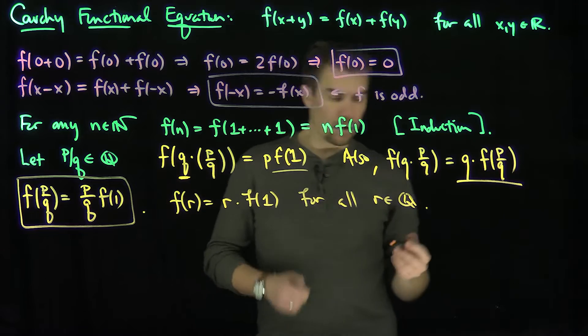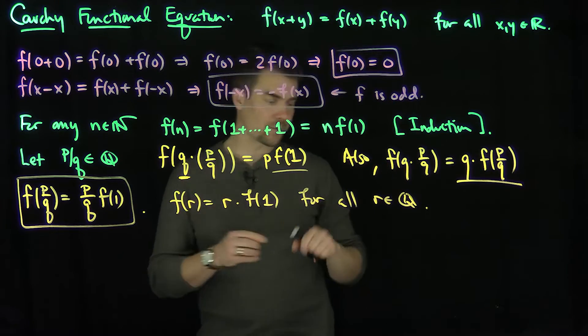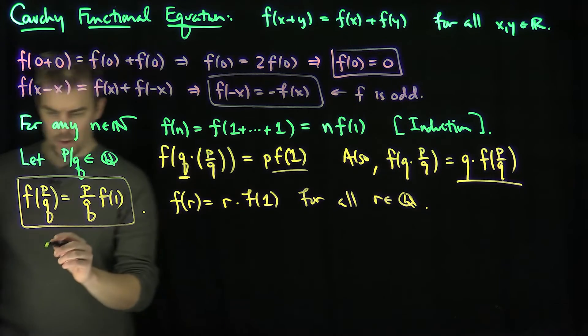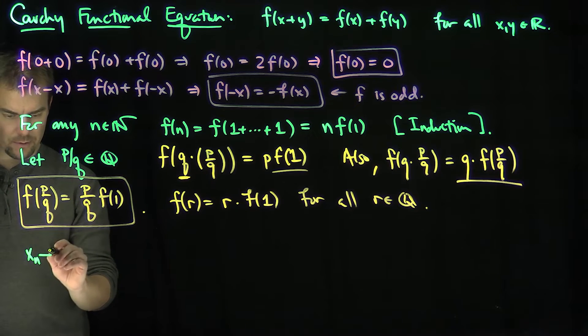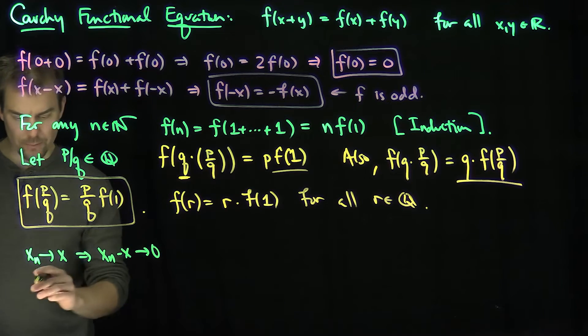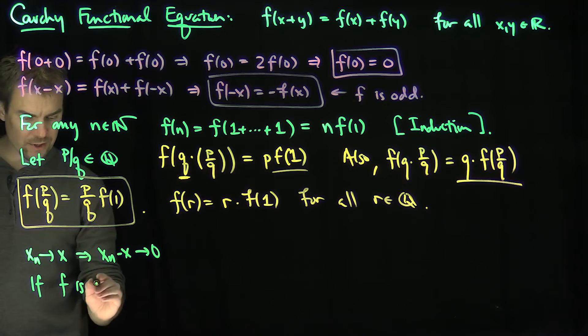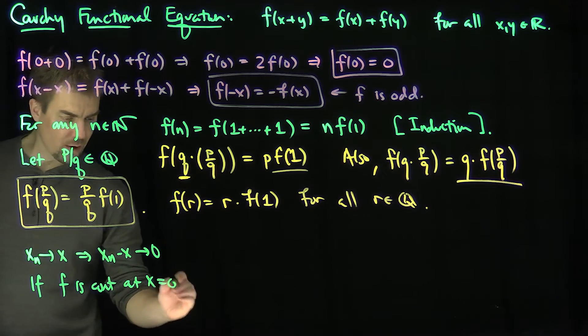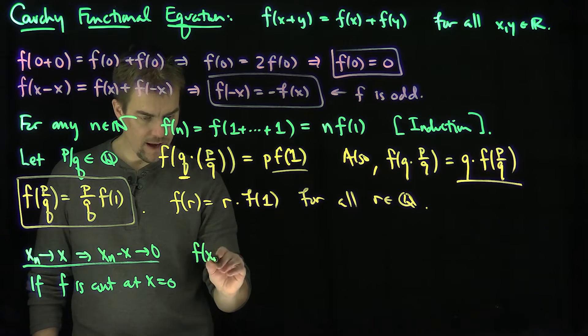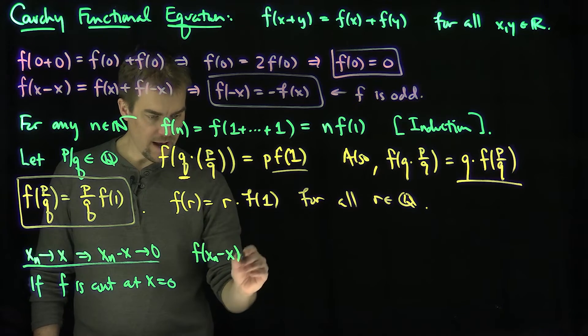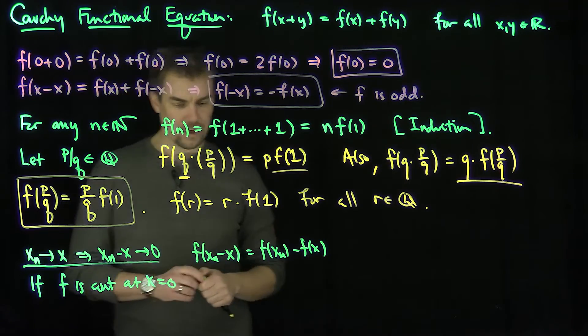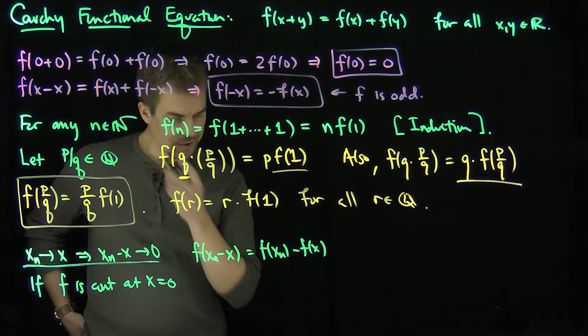And so now, if we can assume the function is continuous—so just as a remark, as a note, if x_n converges to x, then that implies that x_n - x converges to zero. And so if this function f is continuous at x=0, then this relationship over here implies what? Then f(x_n - x) is f(x_n) - f(x) by our functional relationship over here. And so this, of course, is converging to zero. So this converges over here to f(0), which is zero as n goes to infinity.